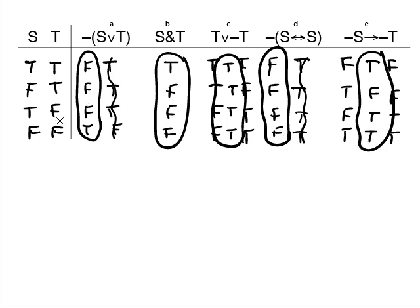We have constructed the table. Question one: which formulas, if any, are contradictions? We're looking for a column of all F's — so sentence D is a contradiction. Which formulas are tautologies? Tautologies are always true, so C is a tautology — all T's. The other concept is contingencies: any combination of T and false. Thus A, B, and E are contingencies.